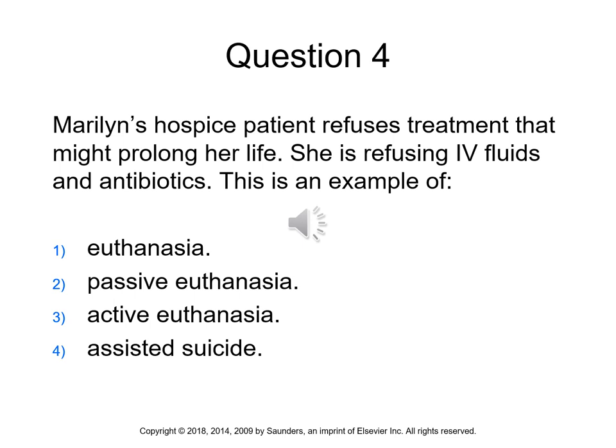Question four: Marilyn's hospice patient refuses treatment that might prolong her life — she is refusing IV fluids and antibiotics. This is an example of passive euthanasia. Passive euthanasia occurs when a patient refuses treatment that would prolong life. Euthanasia is the act of ending another person's life to end suffering, and it could be voluntary or involuntary, with or without the person's consent.